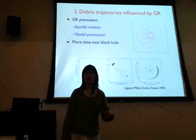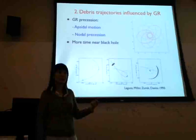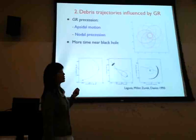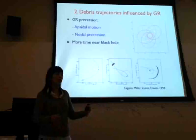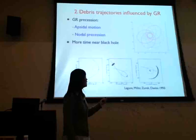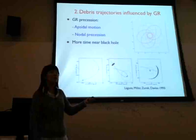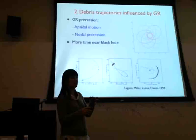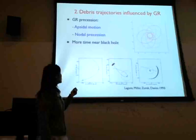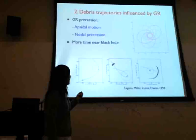After the initial disruption, debris particles travel in ballistic GR orbits, which have two types of GR precession: apsidal motion and nodal precession. Apsidal motion is the advance of the pericenter in the orbital plane, producing geodesic rosette patterns. Nodal precession is the precession of the orbital plane around the spin axis when the orbital plane is not perpendicular to the spin axis, making debris orbits three-dimensional rather than planar.